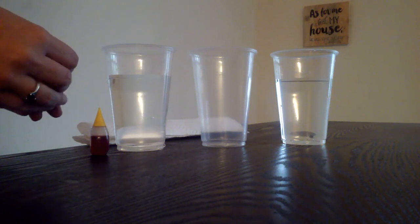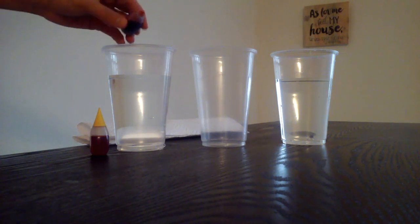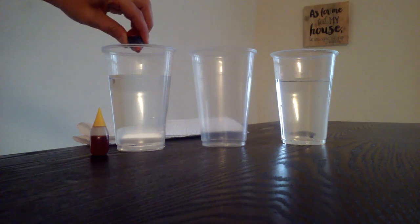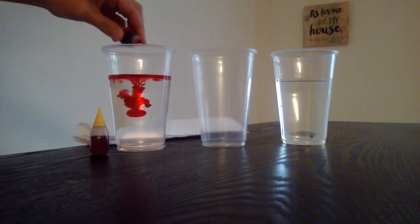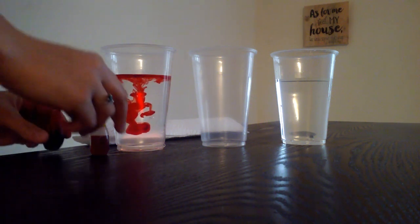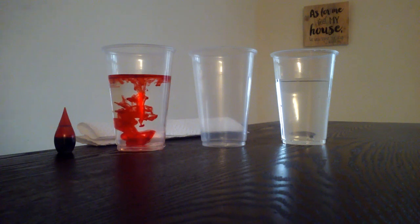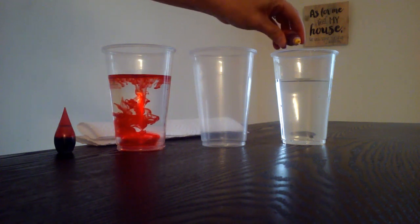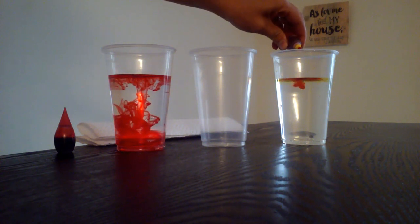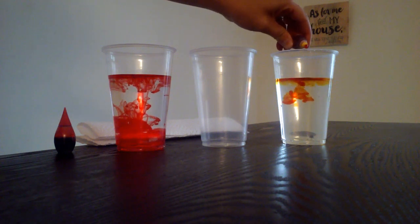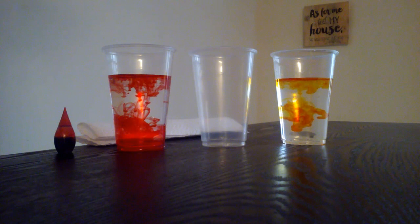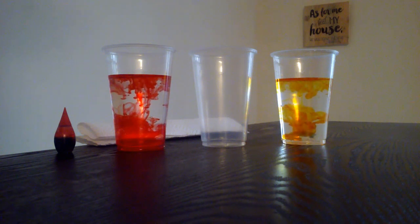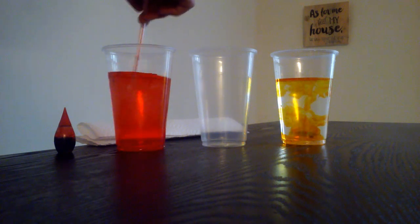You can use whatever color you like. I'm going to use red and yellow today. So in the first cup, in the front, I'm going to add some red food coloring. In the far cup, I'm going to add the yellow. I'm going to leave the middle cup empty. I'm going to use a straw and mix it around a little bit.